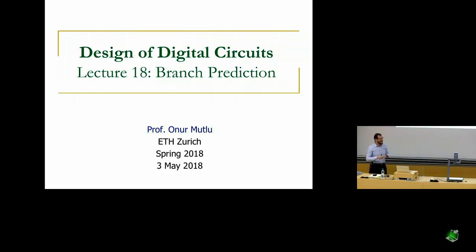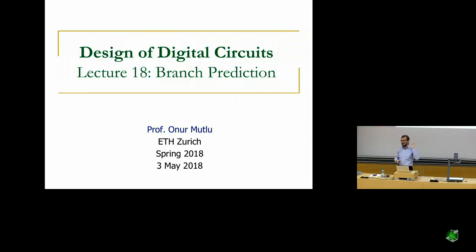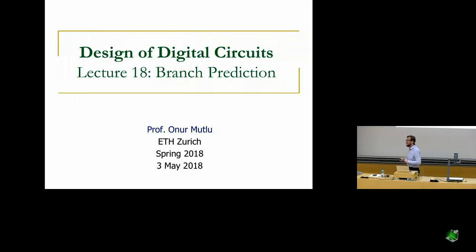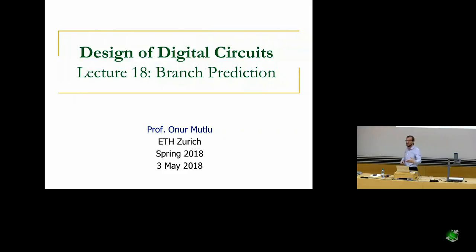We're going to talk about something really exciting in this lecture: branch prediction. This is actually the cause of all the vulnerabilities we're seeing — Meltdown and Spectre — that we've talked about. We're going to talk about how big the problem is, because the problem is much bigger than what many people think. Not just the security problem, but the performance and energy problem.